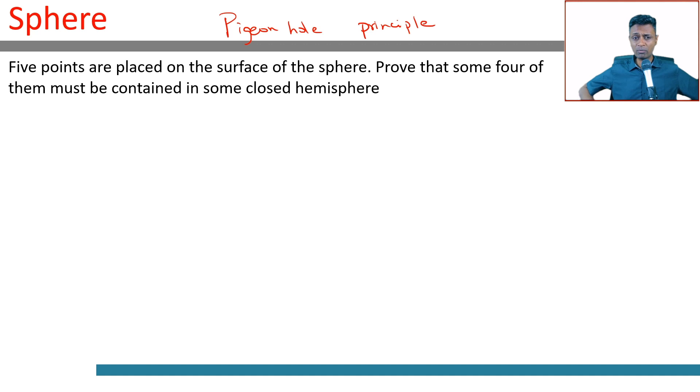Five points are placed on the surface of the sphere. Prove that some four of them must be contained in a hemisphere. This seems intuitive enough. If I have five points somewhere on the surface, you can imagine that I should be able to carve out a hemisphere.